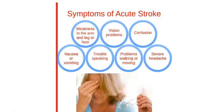Symptoms of acute stroke include weakness in the arm and leg or face, vision problems, confusion, nausea or vomiting, trouble speaking, problems walking or moving, and a severe headache.